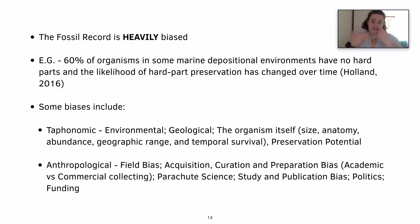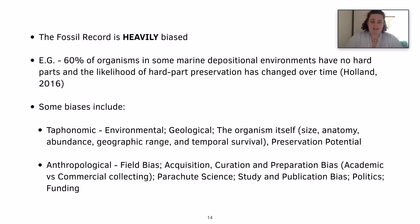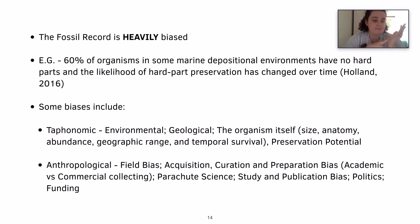For example, if it's a smaller sized organism it's less likely to get preserved than a bigger sized organism. This all plays into preservation potential. The anthropological biases are biases induced by us as humans, and this could include field bias, the acquisition, curation and preparation bias.